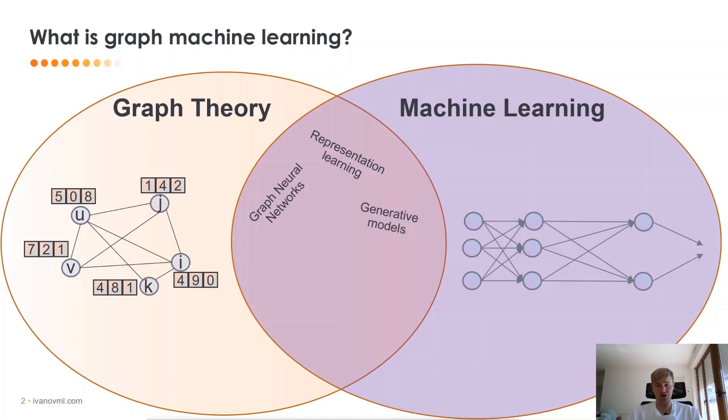It's Generative Models, which is how can you generate graphs with given properties. It's Algorithms on graphs, of course. It's Knowledge Graphs, which are the graphs that represent real-world knowledge.